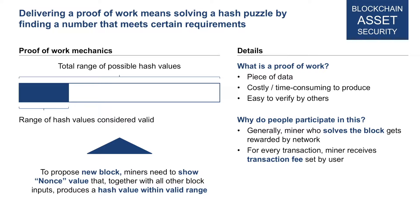So how do you decide which miner gets chosen to publish the next block? This is where proof of work comes into play. To propose a new block, a miner needs to show something called a nonce — a nonce value that, together with all other block inputs, produces a hash value within a certain valid range. This is called a hash puzzle. Different miners compete to solve the hash puzzle, and the miner who first solves it can post the block to the blockchain.